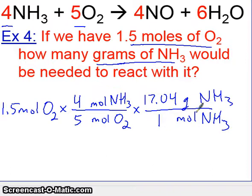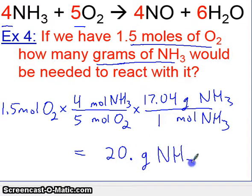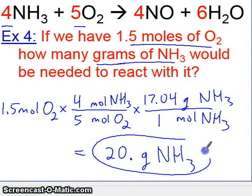Let's go ahead and calculate this. Do 1.5 times 4, divided by 5, times 17.04, divided by 1, which should give you roughly 20.48, or 20.0 grams of NH3. So that's what we're ending up with — 20.0 grams of NH3. I put a decimal there to make sure the zero is significant.